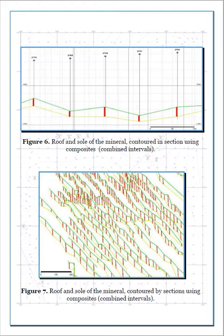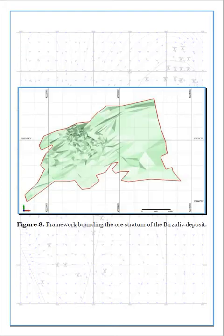With the use of composites, on each of the sections the roof and sole of the mineral deposit are outlined (Figure 6, Figure 7). Using the function to create digital models of surfaces, roof contours and soles of the sections are combined into two surfaces: the roof surface and the sole surface. In the future they turn into a framework that limits the mineral on all sides (Figure 8). The framework does not include the area of off-balance sheet stocks, limited by the balance off-balance limit using the poly-line trimming function.